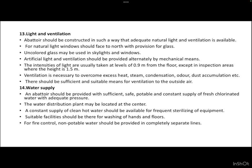A slaughterhouse should be constructed so that adequate natural light and ventilation is available. For natural light, windows should face north with provision for uncolored glass, which may also be used in skylights. Artificial light and ventilation should be provided alternatively by mechanical means. The intensity of light is usually taken at a level of 0.9 meters from the floor, except in inspection areas where the height is 1.5 meters.